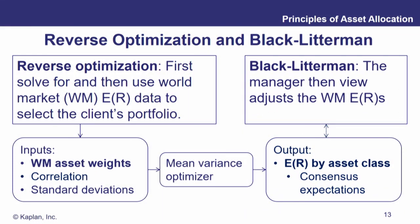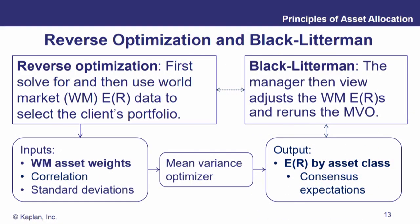With Black-Litterman, we look at data from the world market and then view-adjust it. We have a point of view — in our example, a tech entrepreneur client who feels strongly about that sector. We take that point of view and use it to adjust the expected returns of our input data. Once we make that adjustment, the efficient frontier and the efficient portfolios along that frontier change to incorporate that information. We then rerun the mean variance optimization, and those views are carried out in the portfolio allocations.